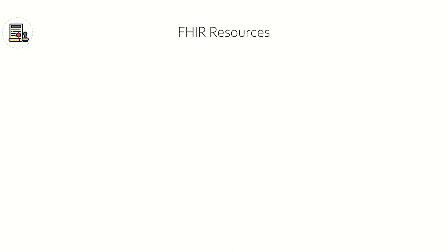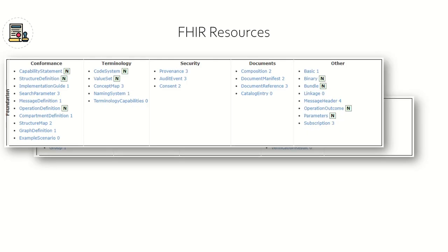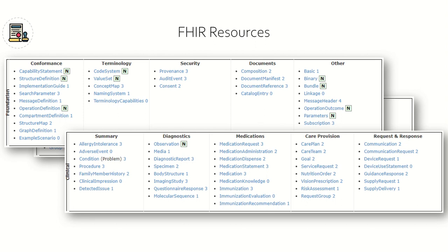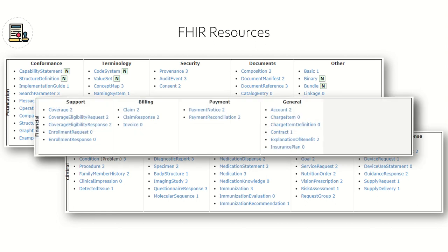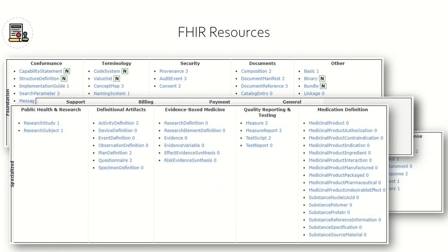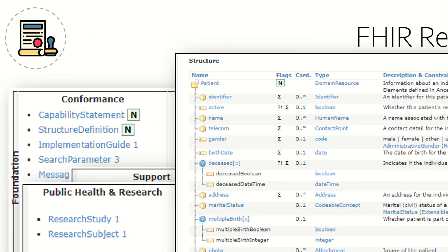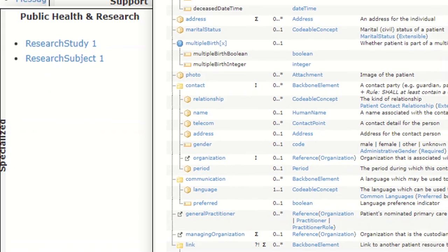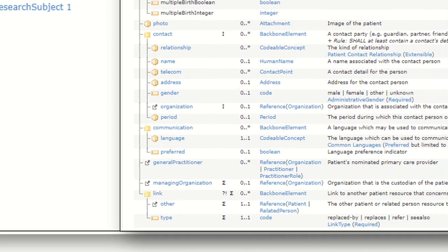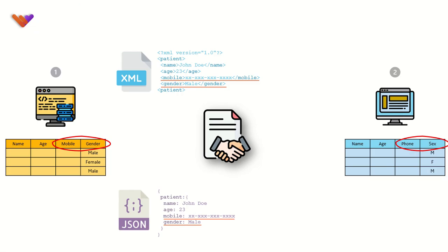The specification not only defines the overall table structure, but also defines and standardizes the field names, the format of data interchange, and the interface to be used for integration. There are many resources defined for every logical entity of a typical clinical workflow as part of FHIR, with more being added with new versions. This is how a patient resource looks — it defines the various columns for the patient table, its relationships with other resources, the cardinality, the codable concept — all of them.